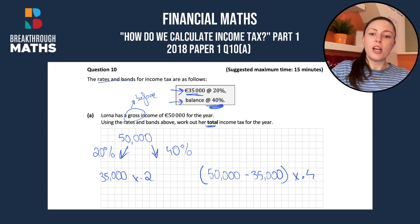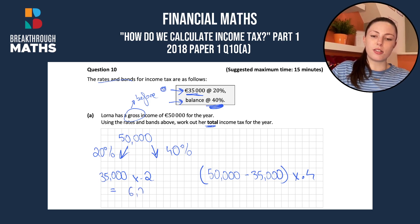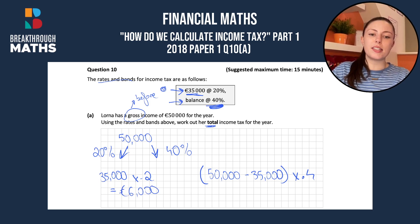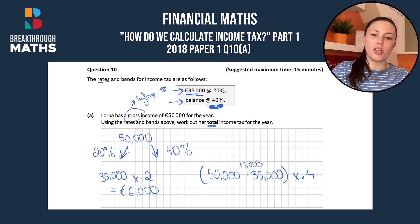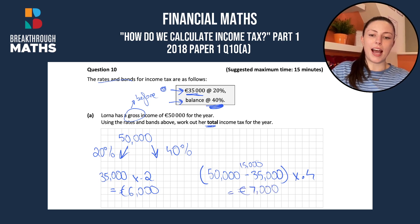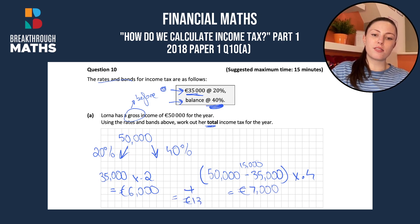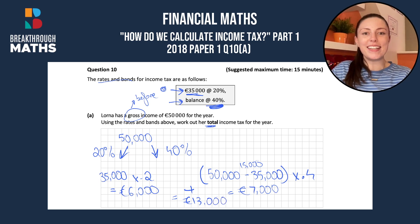So if you get 20% of the $35,000 you get $6,000, and if you take the balance here, which is $15,000, by 0.4 you get $7,000. That means her total tax is $6,000 plus $7,000, so her total income tax for the year is going to be $13,000.